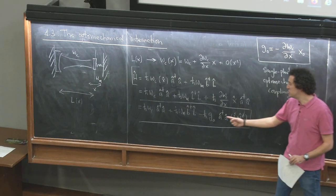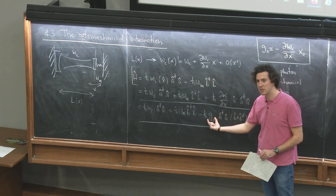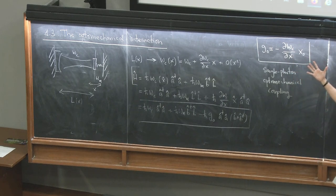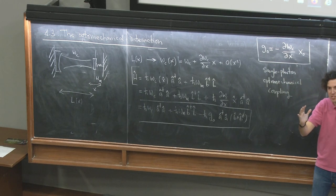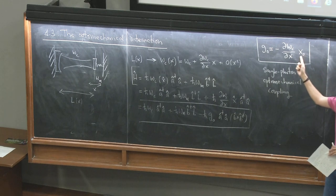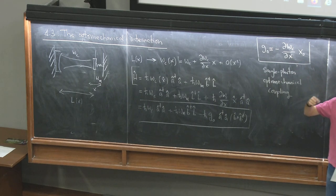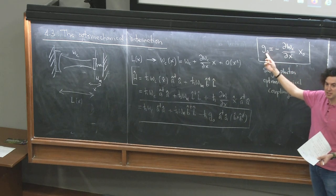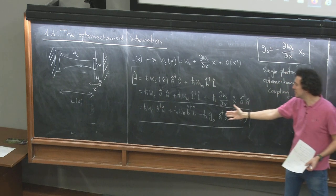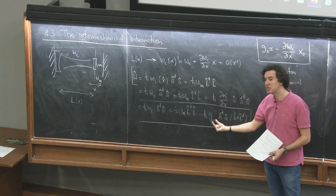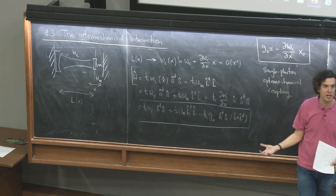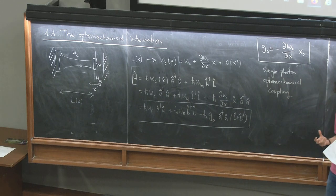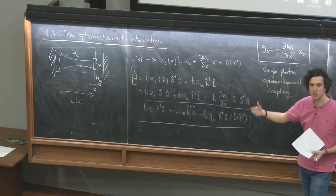This is great news because this Hamiltonian is non-Gaussian and could lead to non-Gaussian physics. But there is a drawback. What is g₀? Physically, g₀ tells you how much the resonance frequency changes if you move the mechanical mode by a zero-point fluctuation amplitude. The larger the mass, the smaller the zero-point motion, and hence the smaller g₀ is. Even though this Hamiltonian is non-Gaussian and very interesting, it is very hard for this coupling to be strong enough to be useful. Today in optomechanics, many experimentalists try to devise clever settings where g₀ is enhanced as large as possible.